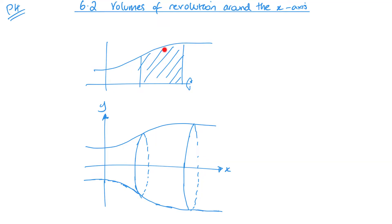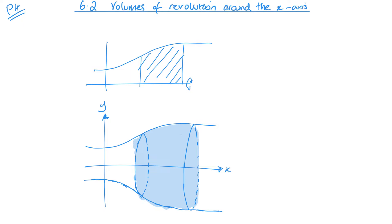We know this cross-sectional area, which would be just one slice — one 2D slice within the shape. But now we've got this whole 3D shape. And what we're looking at today is how we find the volume of that 3D shape.